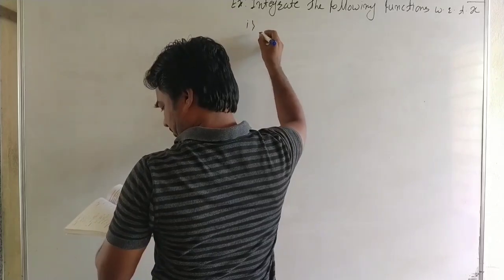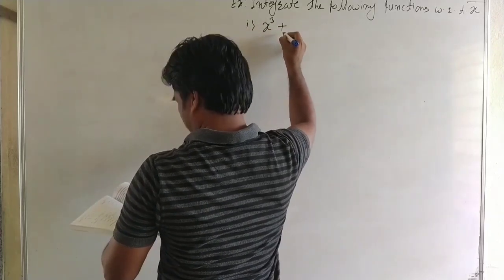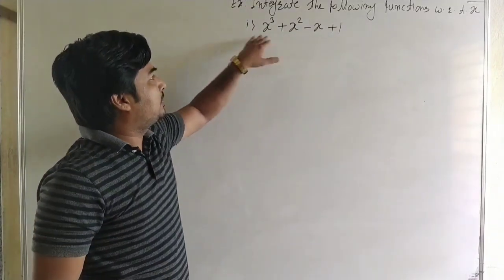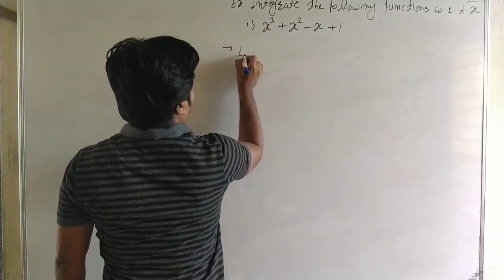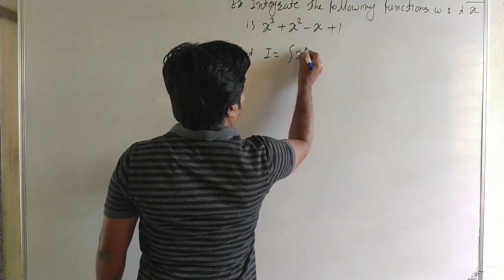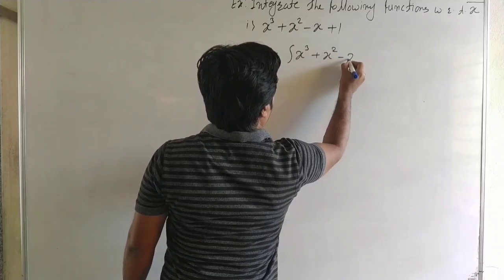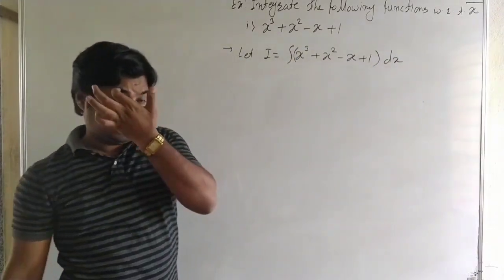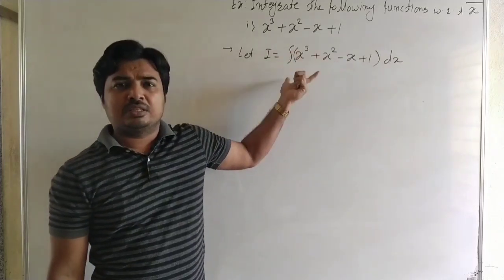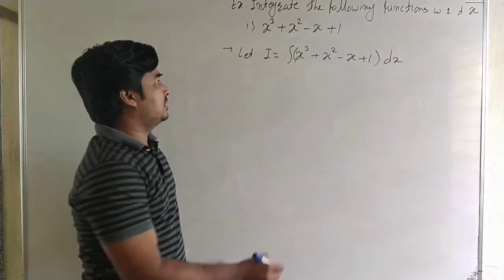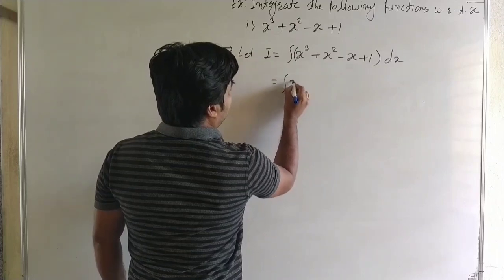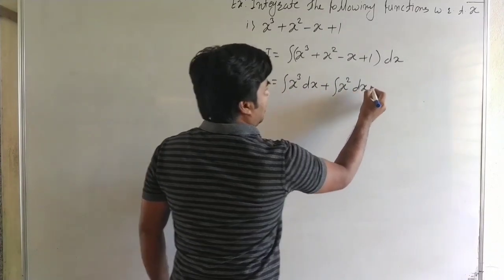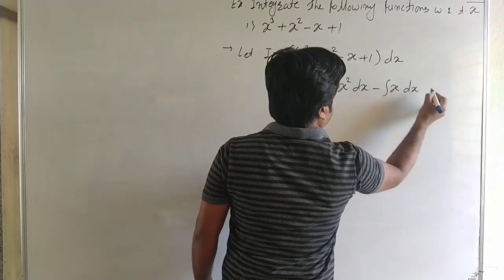Here is the first example: x³ + x² - x + 1. We have to integrate this function. Let I = integration of x³ + x² - x + 1 with respect to x. Now here all terms are in plus or minus. We know the rules of integration — addition of two functions or subtraction of two functions — so we separate all functions.